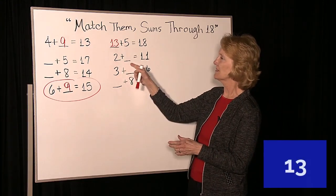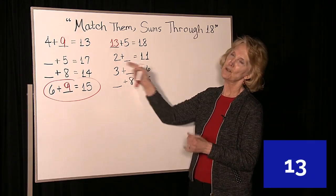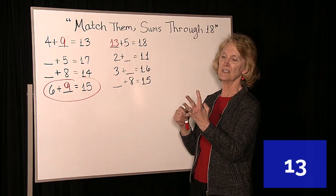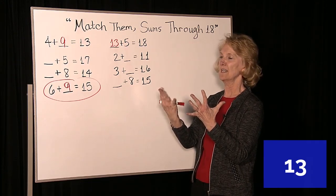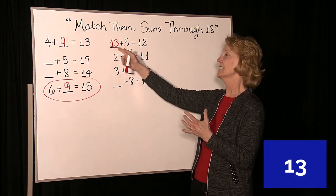This one has 2 plus something equals 11. If we have 2, we need 3, 4, 5, 6, 7, 8, 9, 10, 11. That's 9. It's not a match.